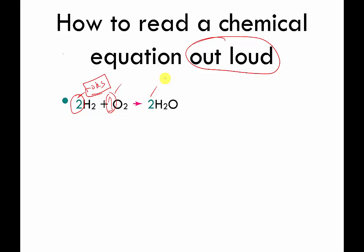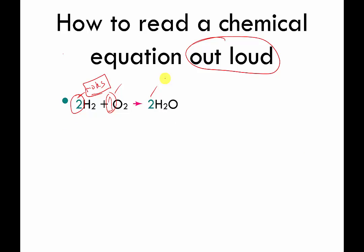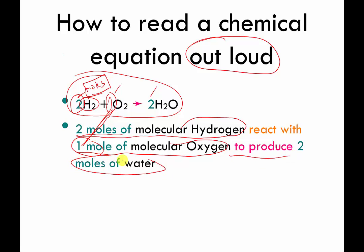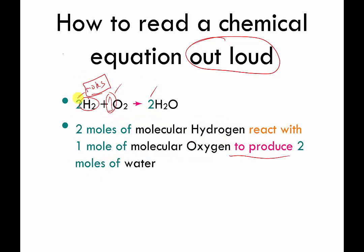For the types of problems we're going to do in the next couple of videos, it's best to think of these numbers as meaning moles. Get accustomed to looking at balanced equations and thinking: two moles, one mole, two moles — or whatever the numbers happen to be. Formally stated: two moles of molecular hydrogen react with one mole of molecular oxygen to produce two moles of water.